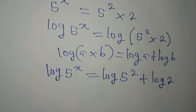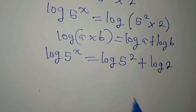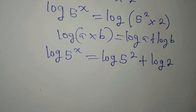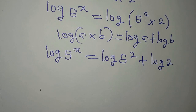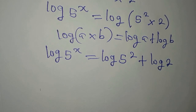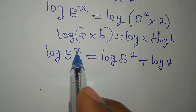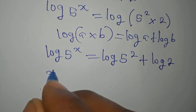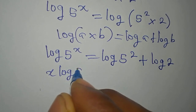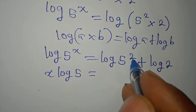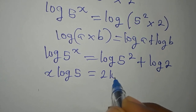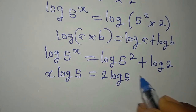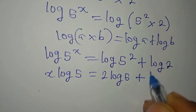There is another law of logarithm that says powers can always come to the front. So the power x comes in front: x log 5 equals 2 log 5 plus log 2, since 2 is the power on the right-hand side and it also moves in front.